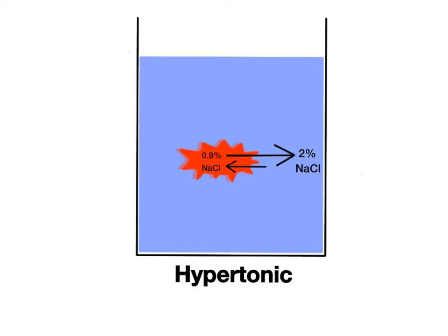The third and final type of tonicity, hypertonic, occurs when the surrounding solution has a higher solute concentration than the cell's cytoplasm. The prefix hyper means over or higher. In our example, let's say the blood plasma has a 2% sodium chloride concentration, which is higher than the 0.9% salt concentration inside the red blood cell.